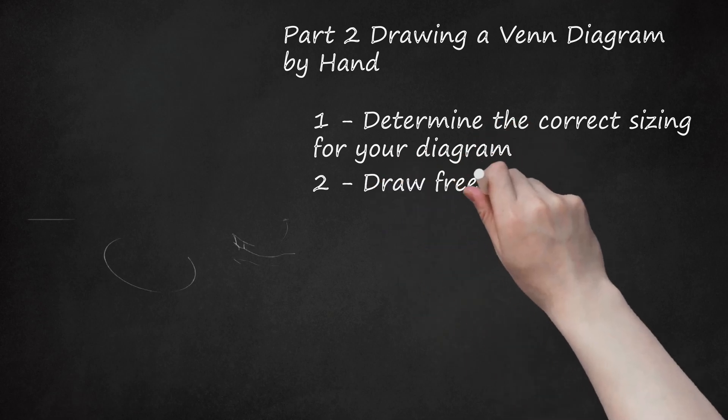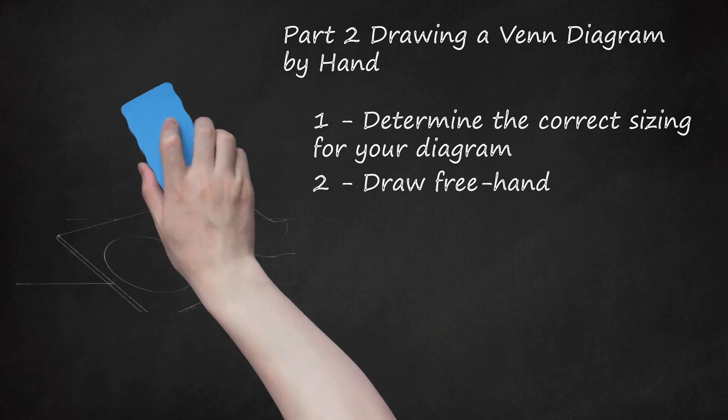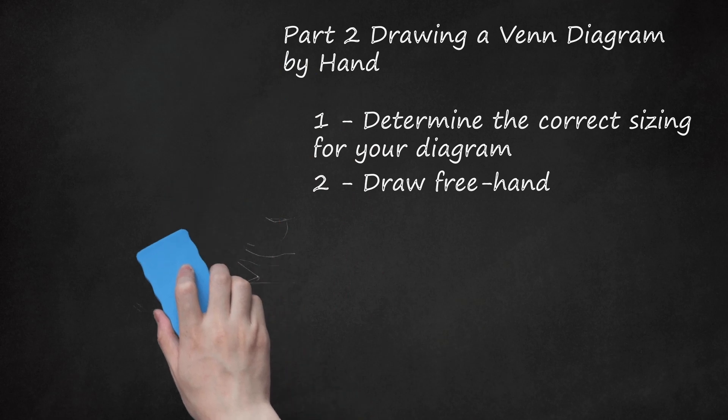Step 2: Draw Free Hand. If slight irregularity of the circles is not an issue, simply hold your writing tool in your hand at a 45-degree angle, and depending on the desired size, make a circular motion with your wrist or elbow while the tip of the pen or pencil is on the paper surface. Repeat as needed.